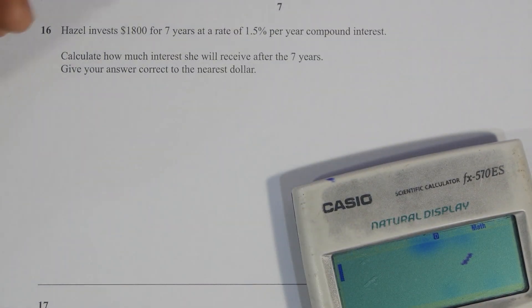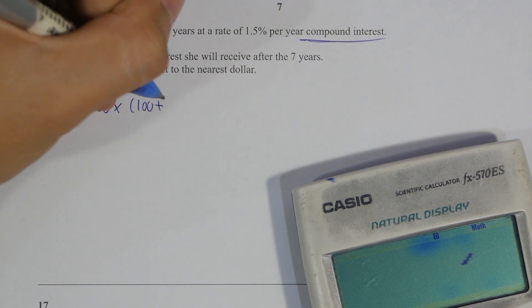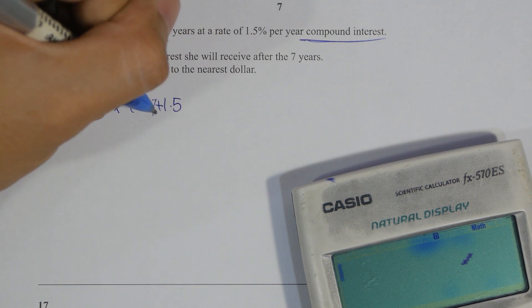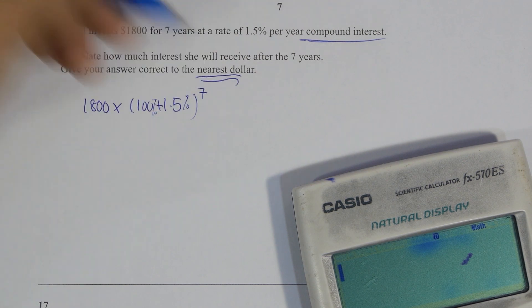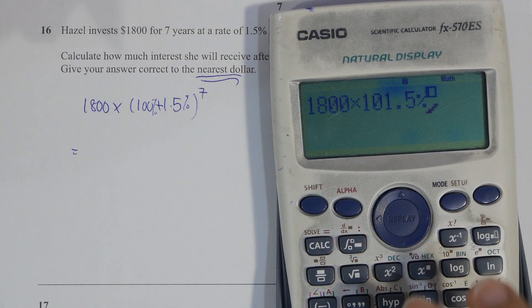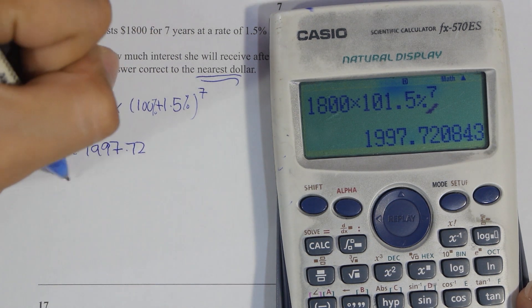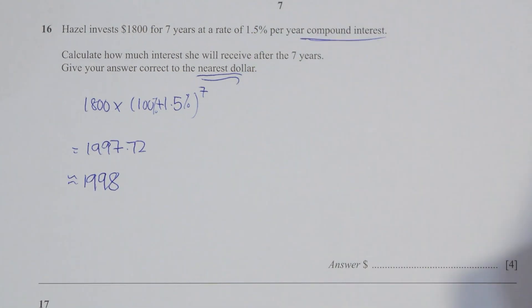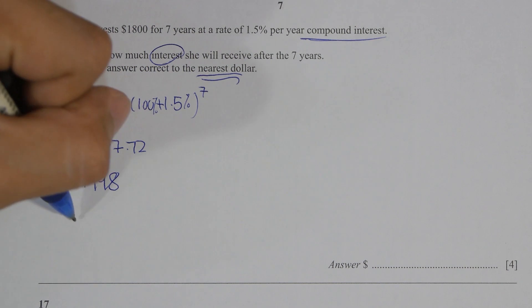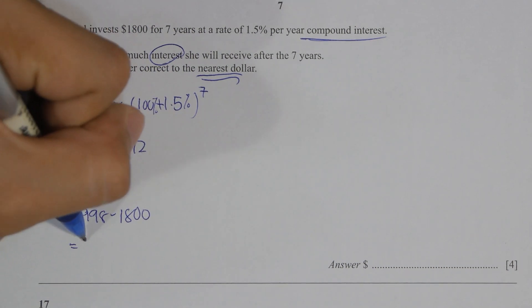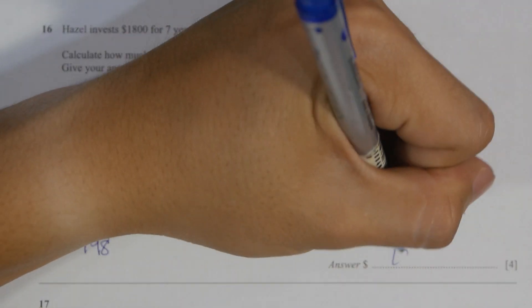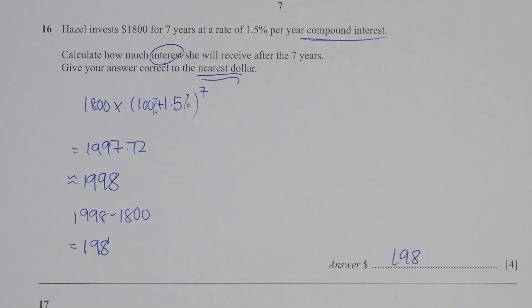For question 16, Hazel invested $1,800 for 7 years. The keyword is compound interest. Substitute into the formula: $1,800 times (100% + 1.5%)^7. Then take note of the keyword 'nearest dollar' and round the result, giving $1,998. The key point is that they want you to find the interest only, so the interest is $1,998 minus $1,800.